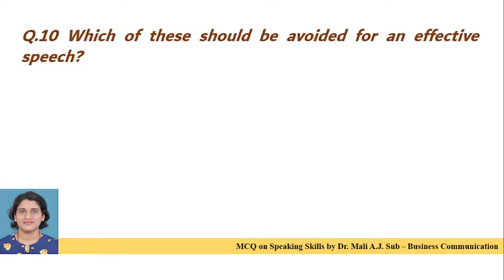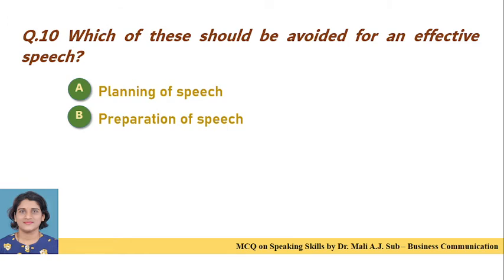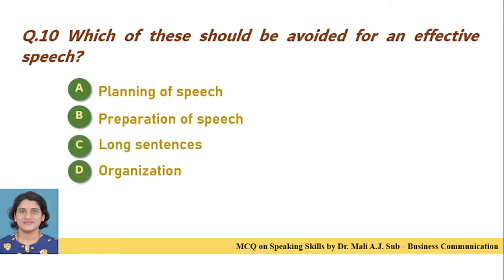Question 10: Which of these should be avoided for an effective speech? Option A: planning of speech. Option B: preparation of speech. Option C: long sentences. Option D: organization. Correct answer is Option C — long sentences should be avoided for an effective speech.